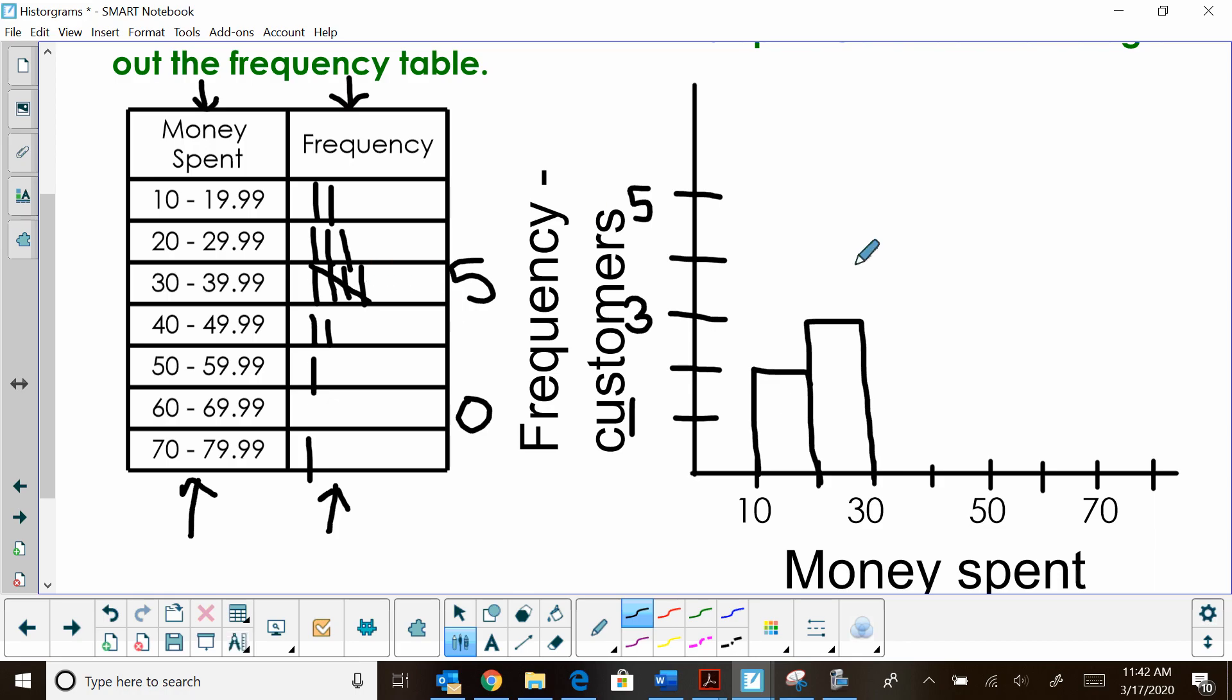Then 30 to 39. That was my highest frequency. So I'm going to make that bar up to 5. Okay, then 40 to 49. I only have 2 in that interval. And then 50 to 59. I just have 1. Then I didn't have anybody spend in the 60s. And then I had another one that spent 70 to 80. And there you go. So then you have your table.